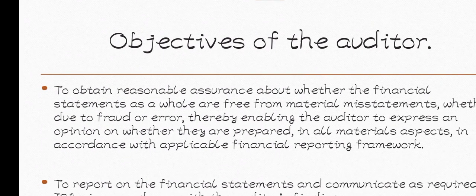The first objective is to obtain reasonable assurance about whether financial statements as a whole are free from material misstatements, whether due to fraud or error. Error is when someone never intended to do it, while fraud is when someone intends to do it. This thereby enables the auditor to express an opinion on whether the statements are prepared in all material aspects in accordance with the applicable financial reporting framework.